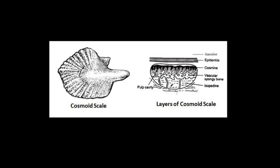The first type of scales are cosmoid scales. These are absent in living fishes and were present in some ostracoderms, placoderms, and sarcopterygians.